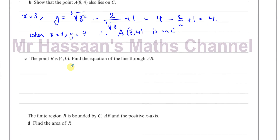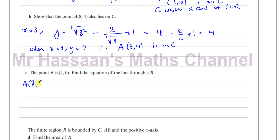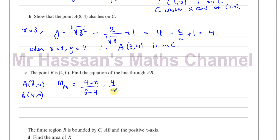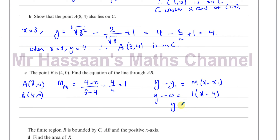Part c: the point B is (4, 0). Find the equation of the line through A and B. We have A(8, 4) and B(4, 0). The gradient is the change in y over the change in x: (4 minus 0) over (8 minus 4), which is 4 over 4, equal to 1. Using y minus y₁ equals m(x minus x₁) with point B: y minus 0 equals 1 times (x minus 4), giving y equals x minus 4. That is the equation of the line through A and B.